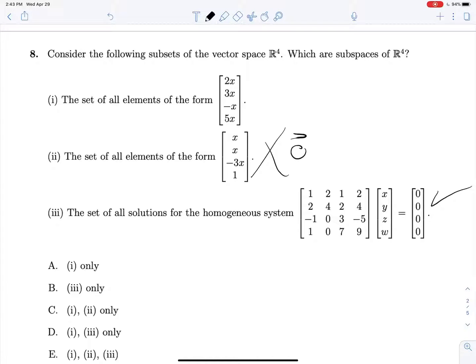What about 1, the set of all elements in this form here? Well, this is just the span of the vector 2, 3, negative 1, 5. And since we know that anything that we can write as a span is a subspace, we could just write that off and say, yep, this is perfectly fine.